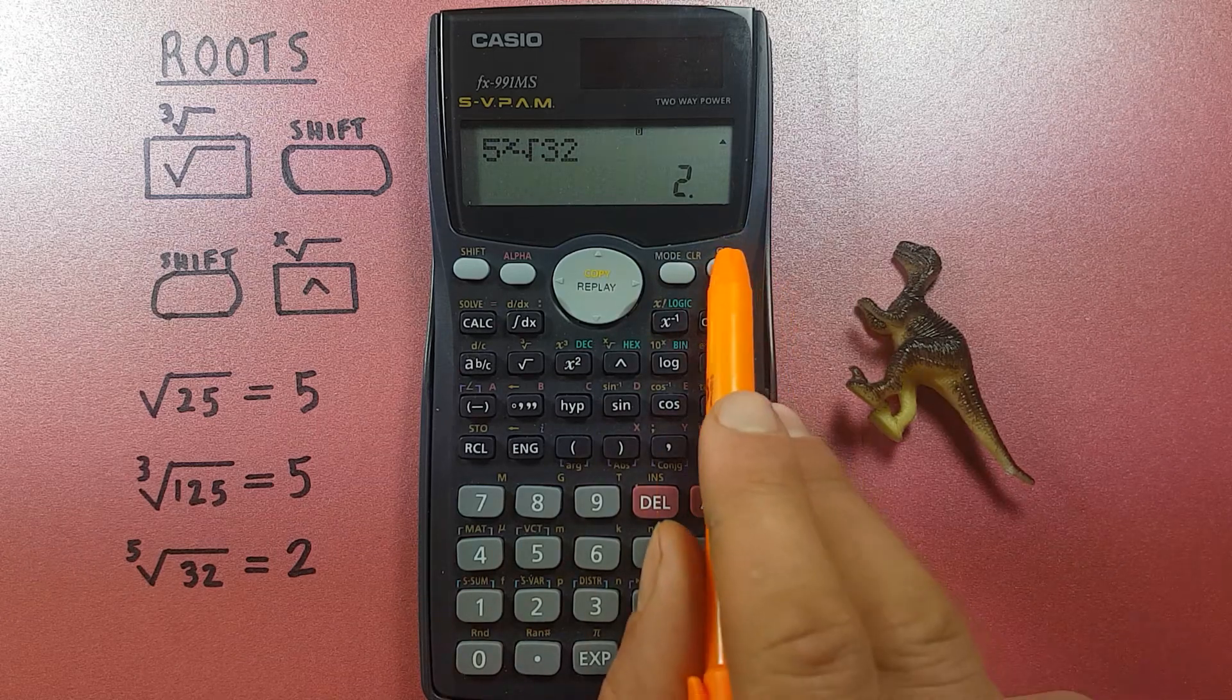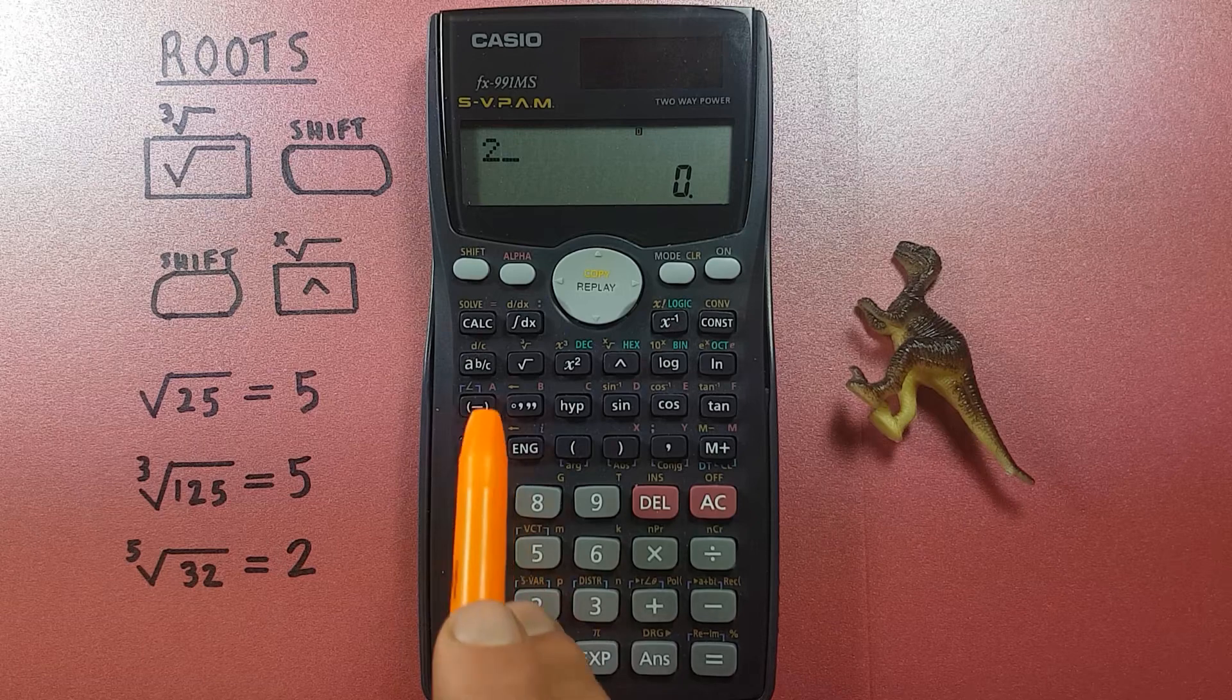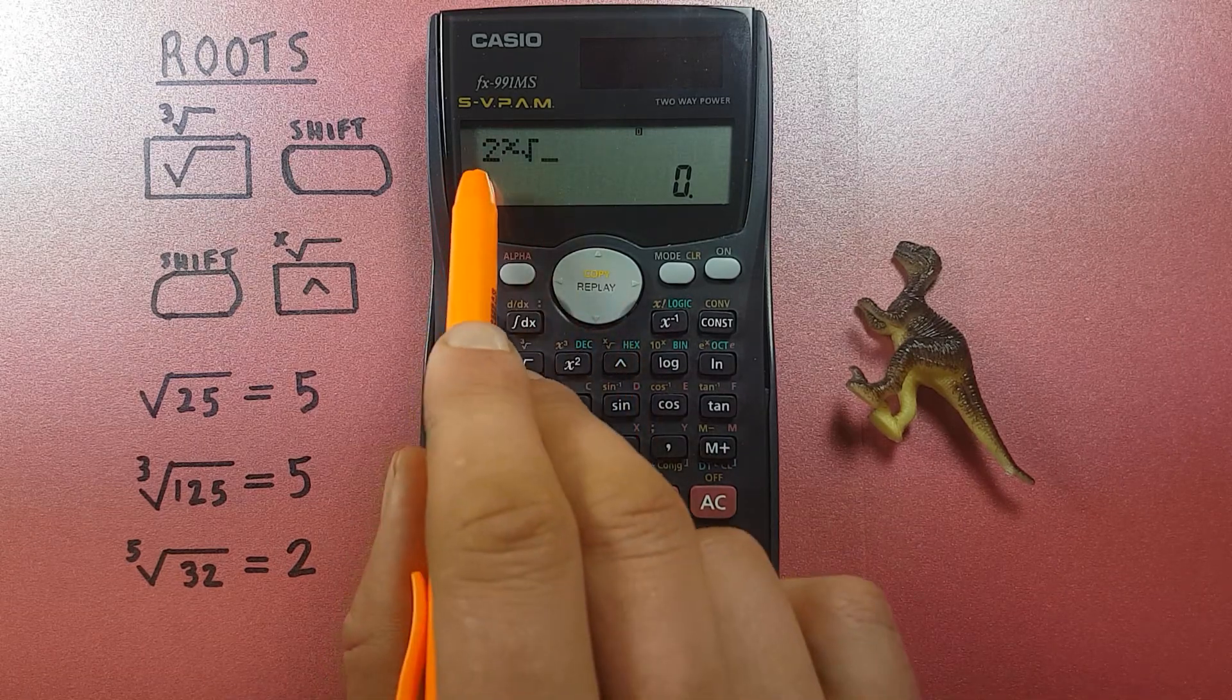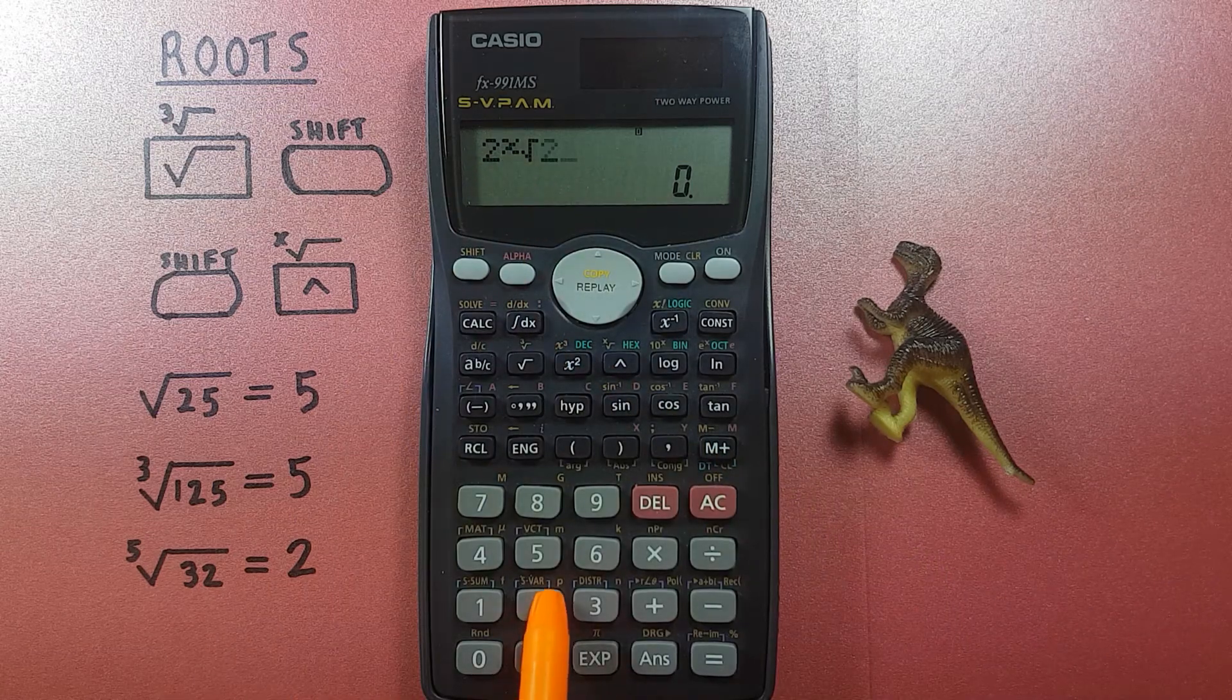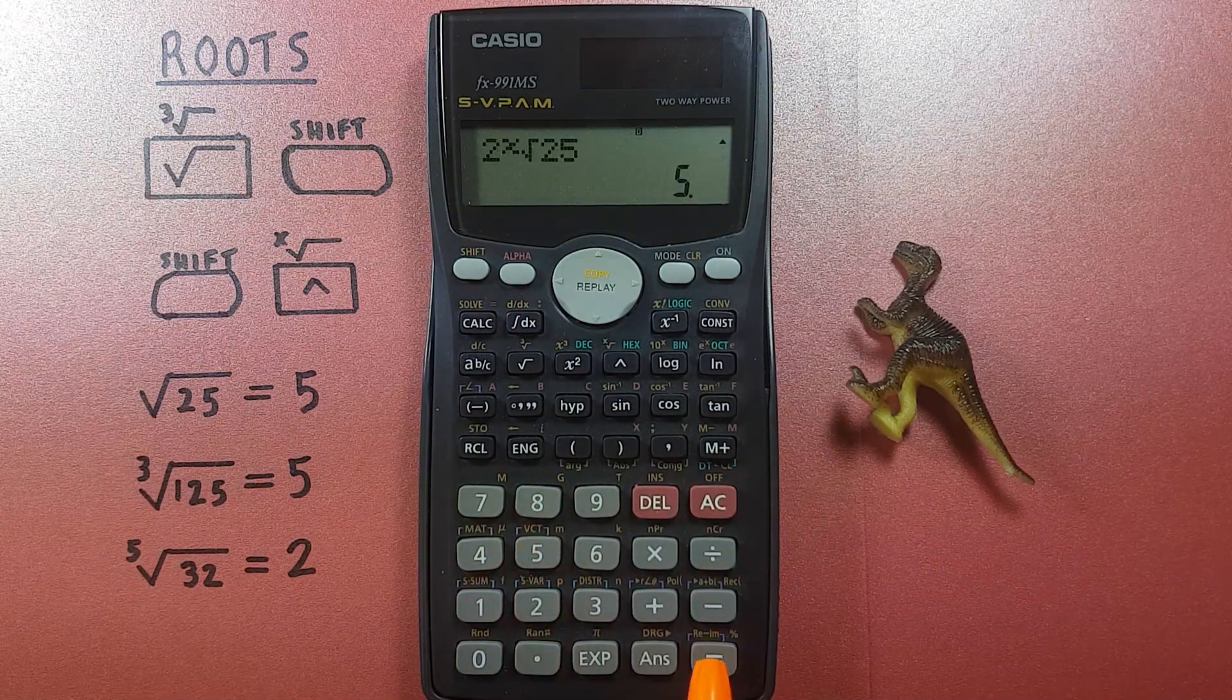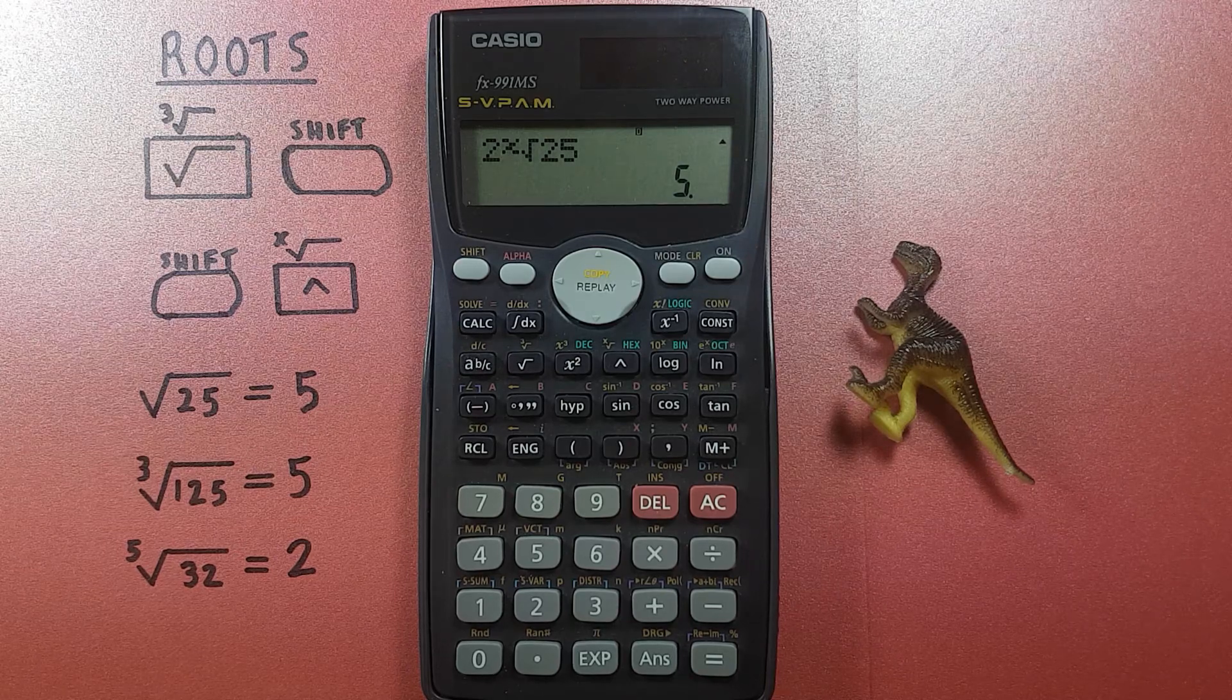We can confirm this works by trying it as a square root. So let's try 2 shift up arrow, or second x-th root of 25, equals 5. There we go. So we know that works.